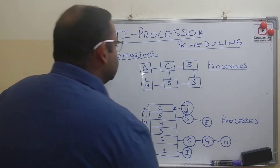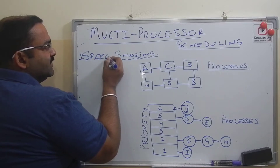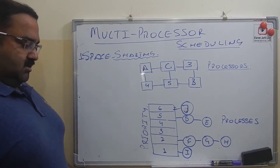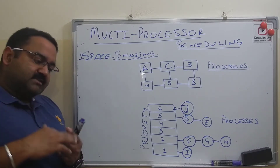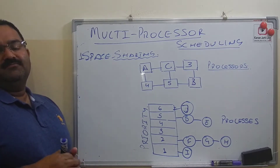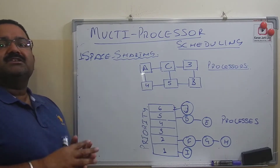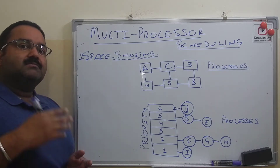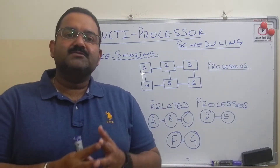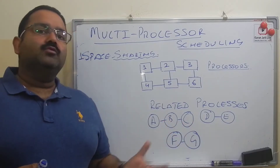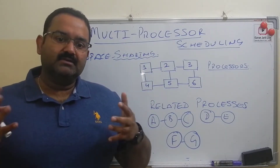The next scheduling is called space sharing. Space sharing scheduling is good when the processes are related to each other — meaning when processes are dependent upon each other and exchanging data, inputs, or outputs between each other. In space sharing scheduling, we schedule all related processes together at the same time and execute them simultaneously.